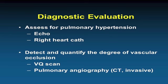Because of this, diagnostic evaluation requires a heightened index of suspicion. You assess for pulmonary hypertension — echocardiography is a reasonable screening test, but right heart catheterization is needed to confirm and assess severity. To detect vascular occlusion, the VQ scan is the preferred test. To quantify the degree of vascular occlusion, pulmonary angiography is needed — typically via CT and conventional pulmonary angiography, with some centers also using MR. Pulmonary angiography provides a detailed anatomic assessment of the clot.